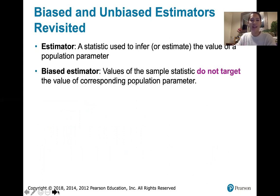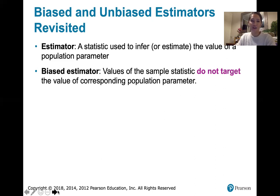An estimator is called a biased estimator if the values of that sample statistic do not target the value of the corresponding population parameter. Some sample statistics might include the sample variance, the sample standard deviation, the sample mean, the sample proportion, the sample range, and the sample median.